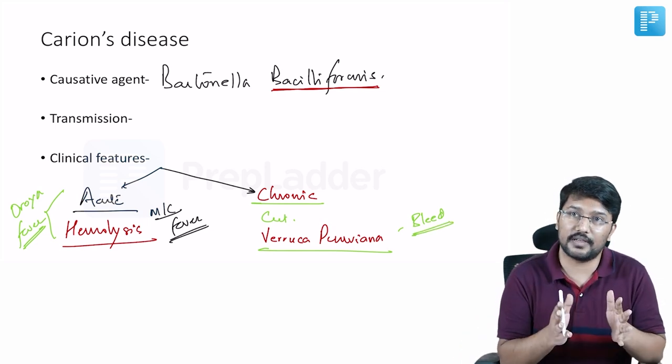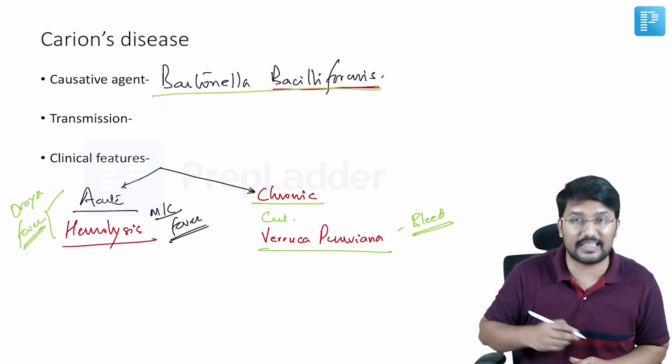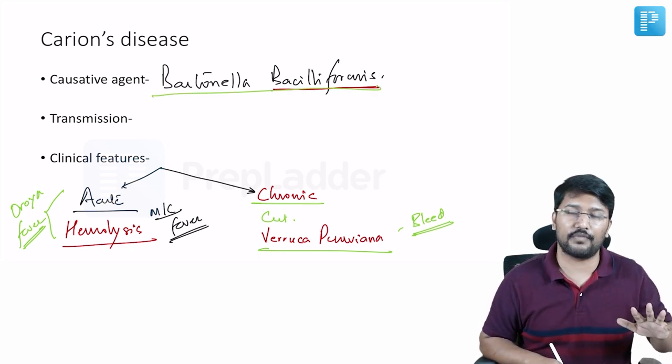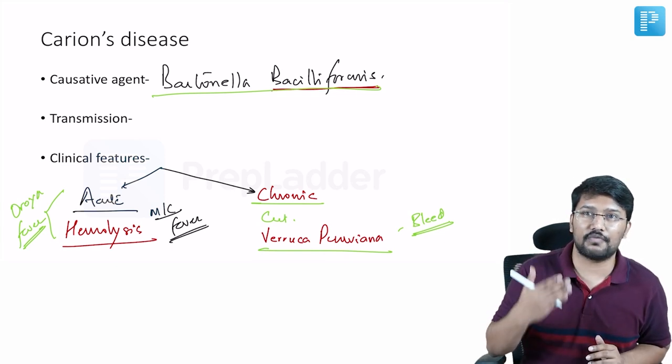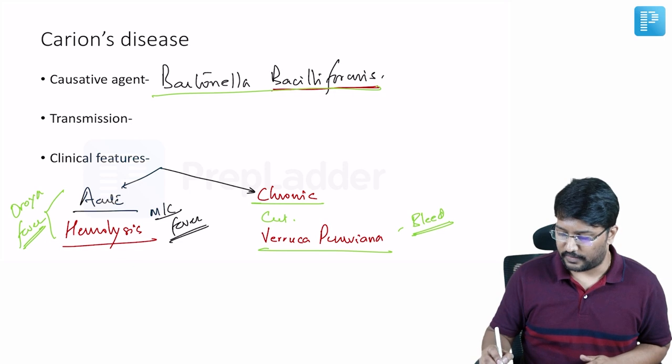So what is Carion's disease is a biphasic illness caused by Bartonella basilliformis presenting in the acute phase as Oroya fever which is dominated by hemolysis and in the chronic phase as cutaneous warts what we call as Verruca peruviana.